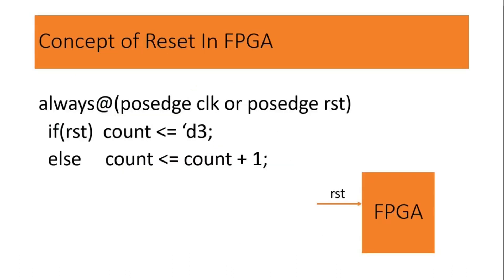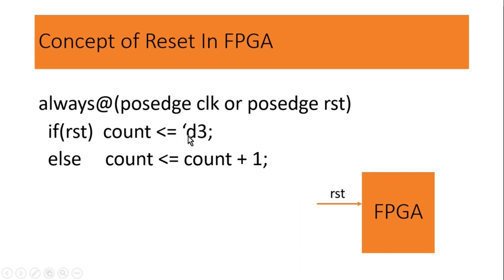Friends, to make you understand the concept of reset or power on reset, I have taken an example of a very small counter code that most of you use in your Verilog files. Here I have taken always at positive edge of the clock or positive edge of the reset — this is an asynchronous reset of active high type. If reset is 1, then count will go to decimal 3 — this D stands for decimal 3.